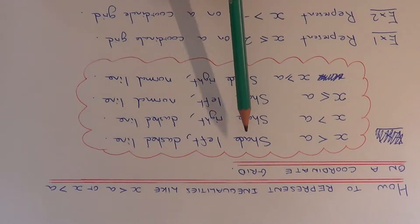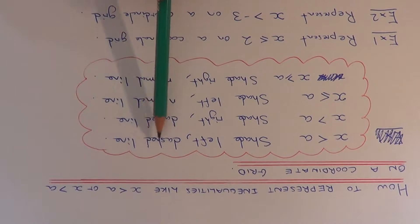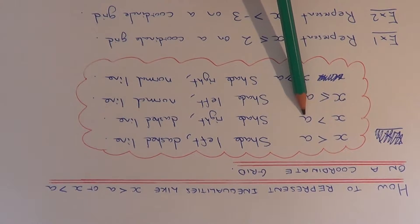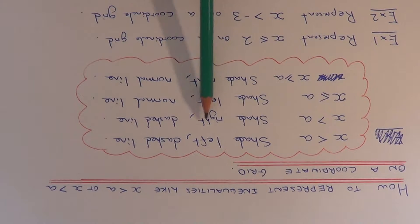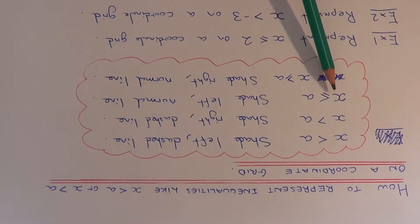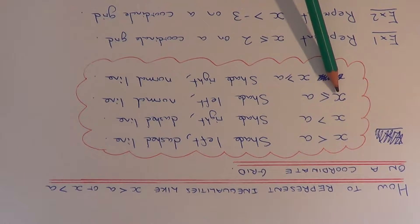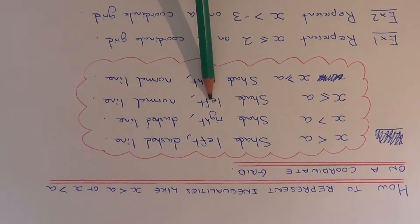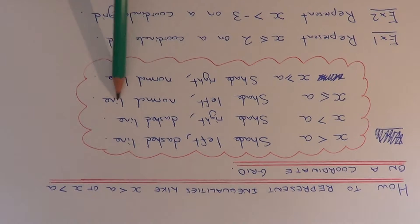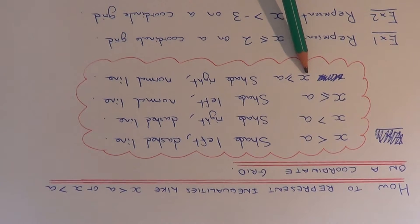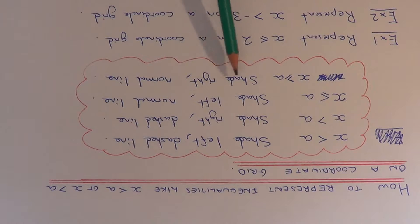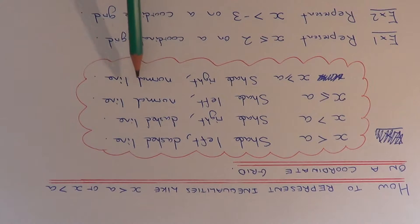For x is less than a, you shade left and you use a dashed line. For x is more than a, you shade right and again you use a dashed line. For x is less than or equal to a, you shade to the left and you do a normal line. And for x is more than or equal to a, you shade to the right and you do a normal line.